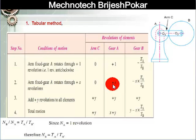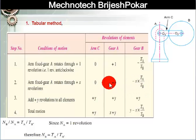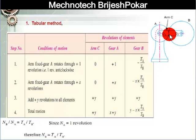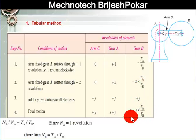Now we add y revolutions to all elements: plus y to arm C, plus y to gear A, and plus y to gear B. The total motion of the gear train is: arm C = y, gear A = x + y, and gear B = y − x×(Ta/Tb). This gives us the complete tabular method summary.